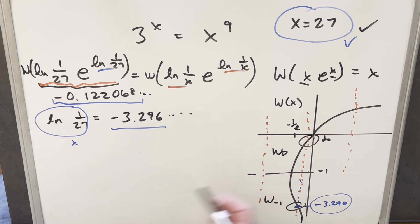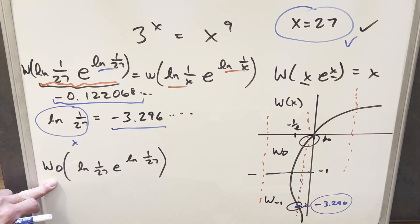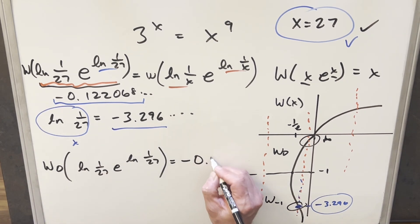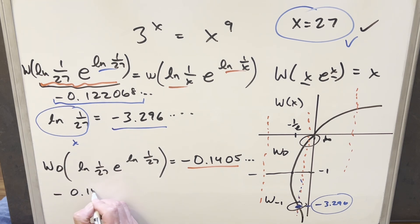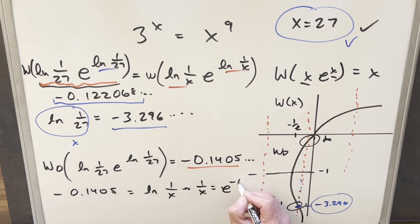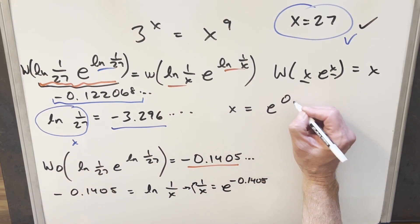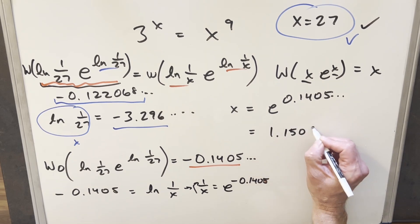To find our second solution, we need the W₀ branch. Unfortunately, I don't have a nice way to calculate this by hand — I need a spreadsheet or Wolfram Alpha. Using Wolfram Alpha, I got a value of approximately -0.1405. Plugging that in: -0.1405 = ln(1/x), so 1/x = e^(-0.1405), and taking the reciprocal gives x = e^(0.1405). Using a calculator, our final second solution is approximately x = 1.1508.